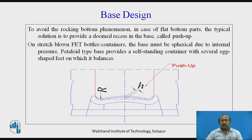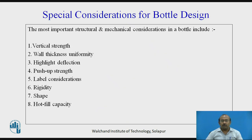Base design. To avoid the rocking bottom phenomenon in flat bottom parts, the typical solution is to provide a domed recess in the base called a push-up. On stretch-blown PET bottle containers, the base must be spherical due to internal pressure. A petaloid type base provides a self-standing container with several egg-shaped feet on which it balances. Special considerations for bottle design include vertical strength, wall thickness uniformity, highlight deflection, push-up strength, label consideration, rigidity, shape, hot fill capacity, and so on.